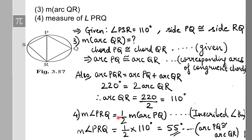Fourth sub-question: measure of angle PRQ. Angle PRQ is an inscribed angle, so its measure is half the arc PQ. Half of 110 degrees is 55 degrees. In this problem we applied the cyclic quadrilateral theorem, the inscribed angle theorem, and the congruent chords and congruent arcs theorem.